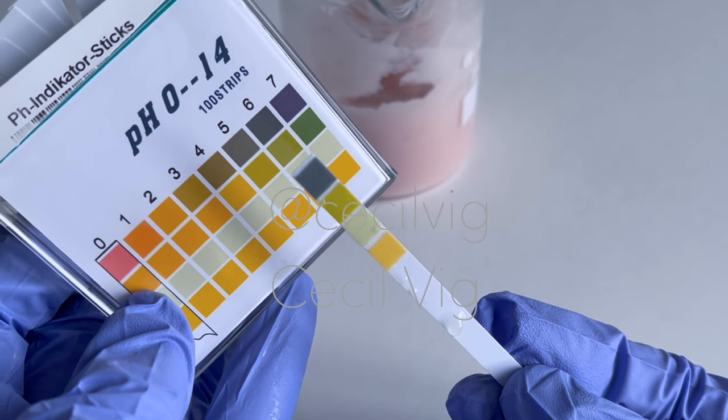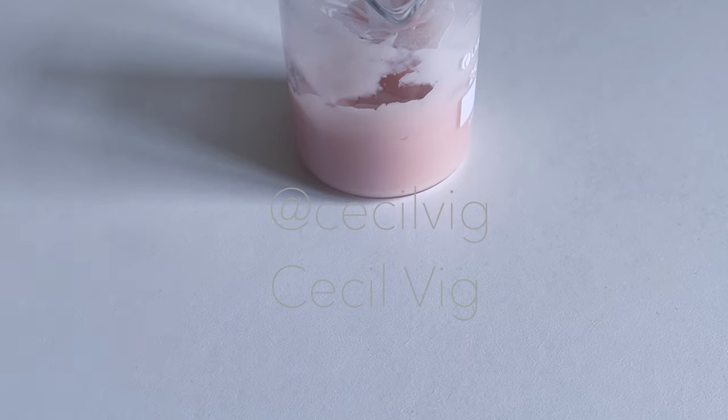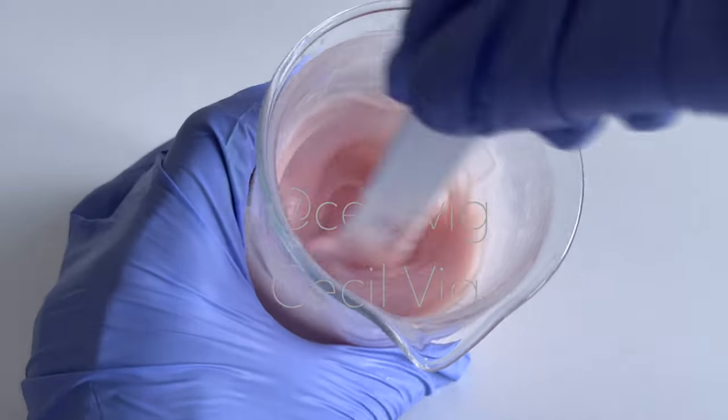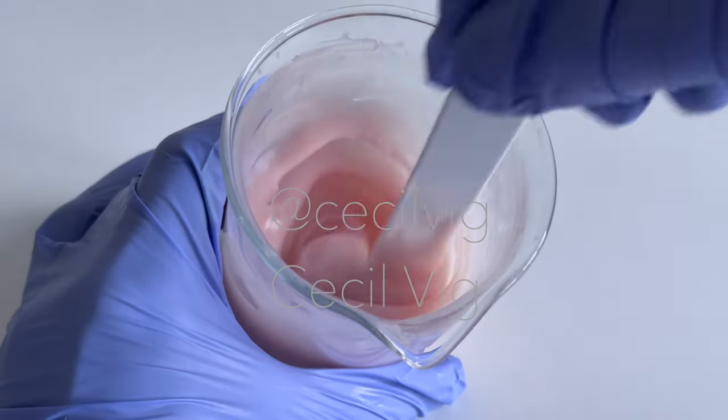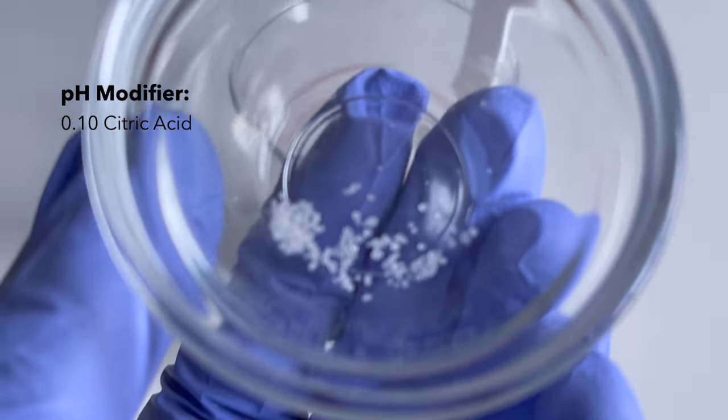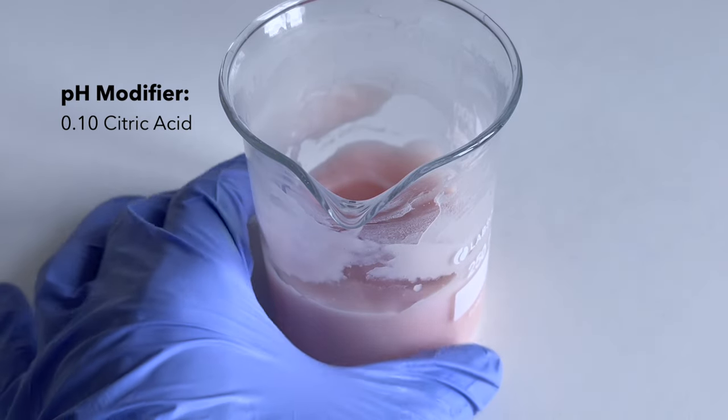For this conditioner to be effective for our hair and scalp, the pH should be around 5 to 5.5, so we need to lower it. To lower the pH value from 6 to around 5 to 5.5, I add a pinch of citric acid to the conditioner. Mix well.